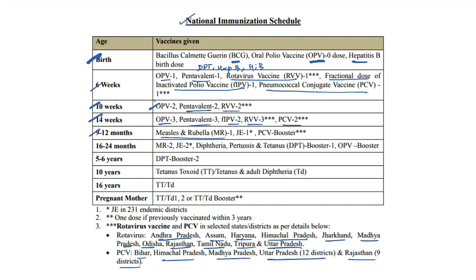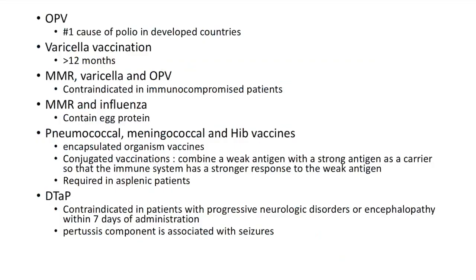At 9-12 months — MR1, JE1 in 231 endemic districts, and PCV booster. Between 16-24 months — MR2, JE2, DPT booster, and OPV booster. Between 5-6 years — DPT booster 2. At 10 years — Td (tetanus and adult diphtheria). At 16 years — Td again. For pregnant mothers — two doses of Td.